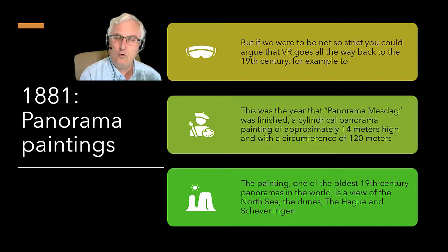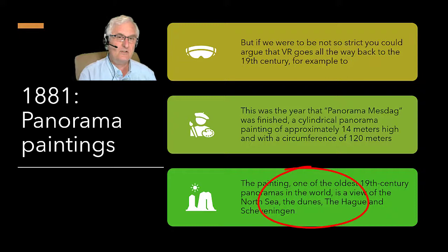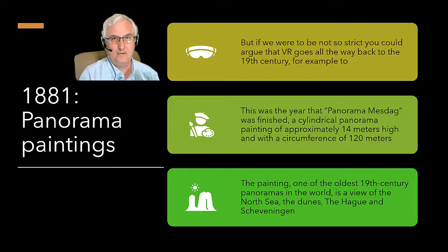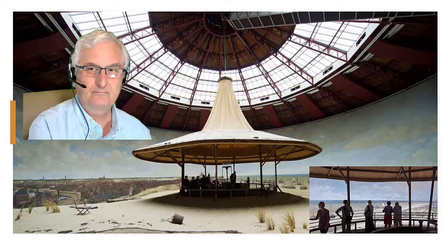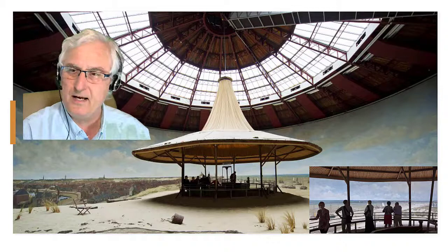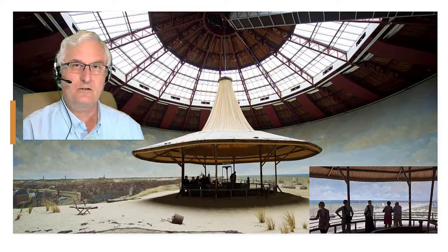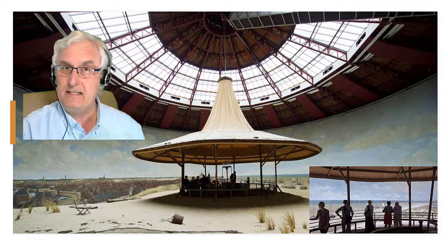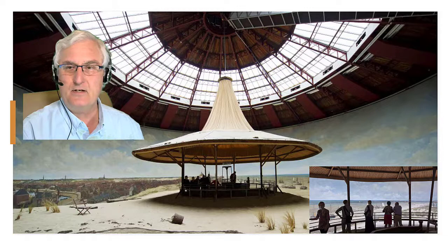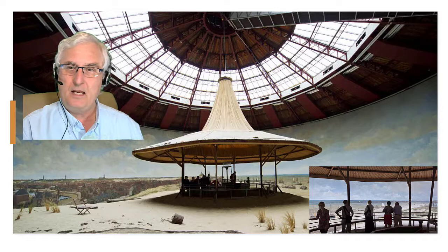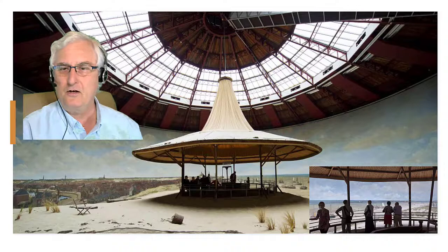It's a cylindrical panorama painting of approximately 14 meters high with a circumference of around 120 meters. The painting is one of the oldest 19th century panoramas in the world — a view of the North Sea, the dunes, and the Hague. As Rembrandt is associated with Amsterdam and Vermeer with Delft, so Mesdag is associated with the Hague. Mesdag was born in Holland in 1831 and later moved to the Hague with his wife. He was considered an influential man in the art world and an important painter.